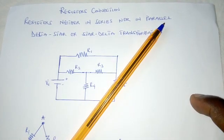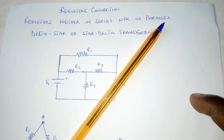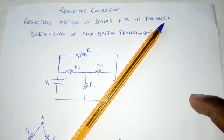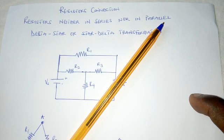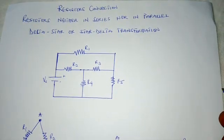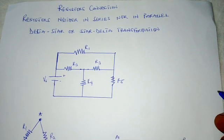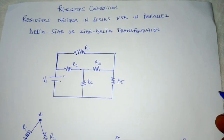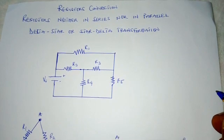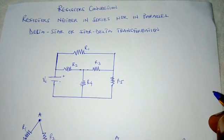Hello friends, welcome to LegendLens. Today we will look at how we can find the effective resistance of resistors which are neither in series nor in parallel. There are some circuits where we cannot identify any two resistors to be either in series or in parallel.